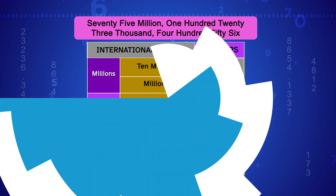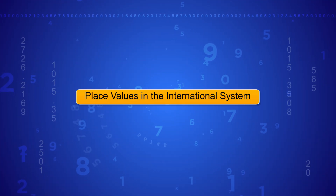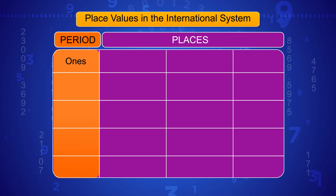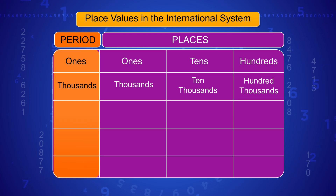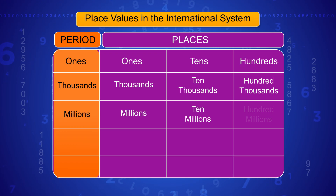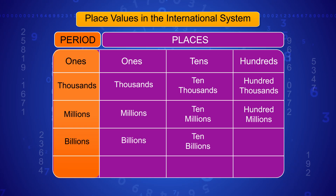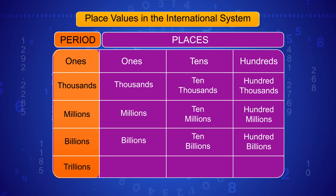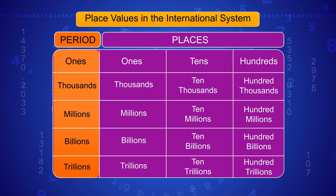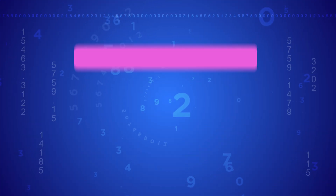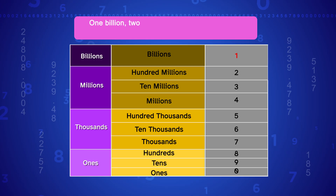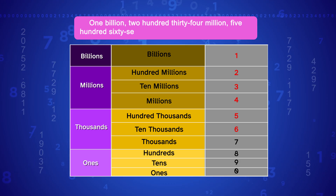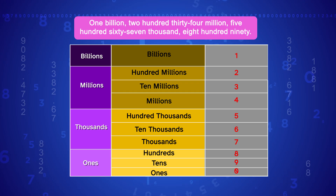Here's how the place values are grouped in the International System: ones, tens, hundreds — then thousands, ten thousands, hundred thousands — then millions, ten millions, hundred millions — then billions, ten billions, hundred billions — then trillions, ten trillions, hundred trillions. Each period is separated by a comma. For example: 1,234,567,890 is read as one billion, two hundred thirty-four million, five hundred sixty-seven thousand, eight hundred ninety.